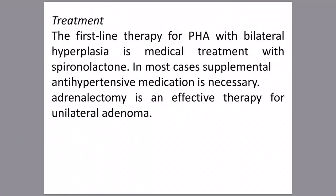Treatment: the first-line therapy for primary hyperaldosteronism with bilateral hyperplasia is medical treatment — mainly spironolactone, a potassium-sparing diuretic that increases sodium excretion and retains potassium, reversing the action of aldosterone. Supplemental antihypertensive medication is usually necessary. Adrenalectomy is the treatment of choice for unilateral adenoma, the majority of cases, and usually cures the disease.